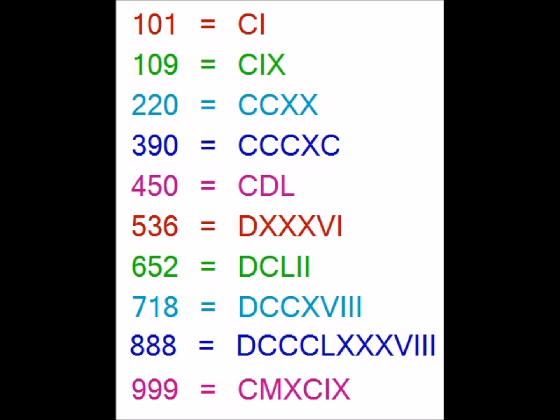For 999, we use CM for 900, XC for 90, and IX for 9, so CMXCIX gives 999. Similarly, we can construct any number between 100 and 1000. I hope you enjoyed the video — thank you!